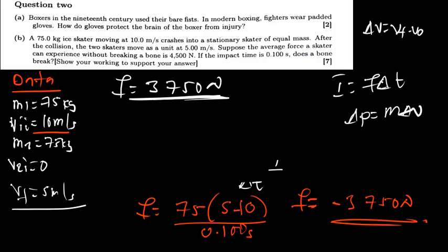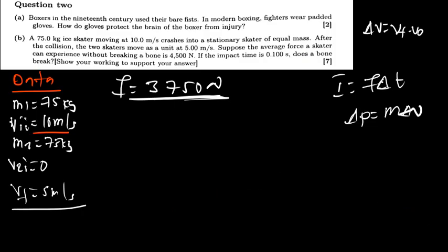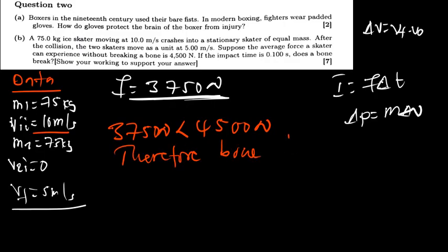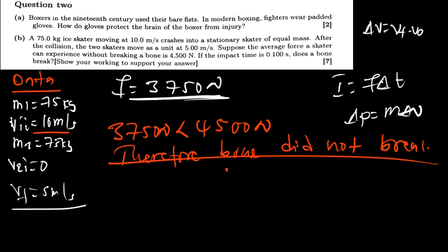Now if that is the force, what next should we know? The next thing that we have to know is now we compare this force and the force that we have been given. The question was, suppose the average force a skater can experience without breaking a bone is 4,500. If the impact of the time is 4,500 newton, does the bone break? So this force is less than 4,500 newton. Therefore, the bone did not break. As simple as that. The bone did not break. So that is it for part A and B.